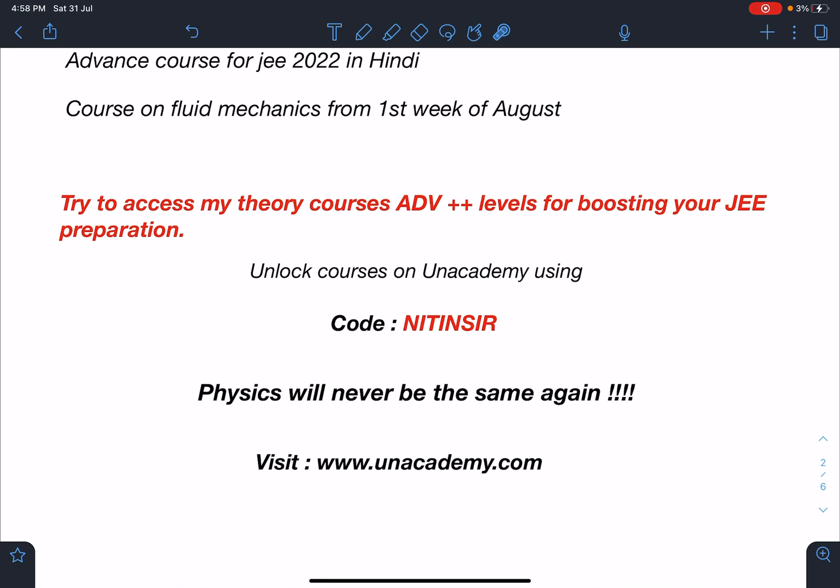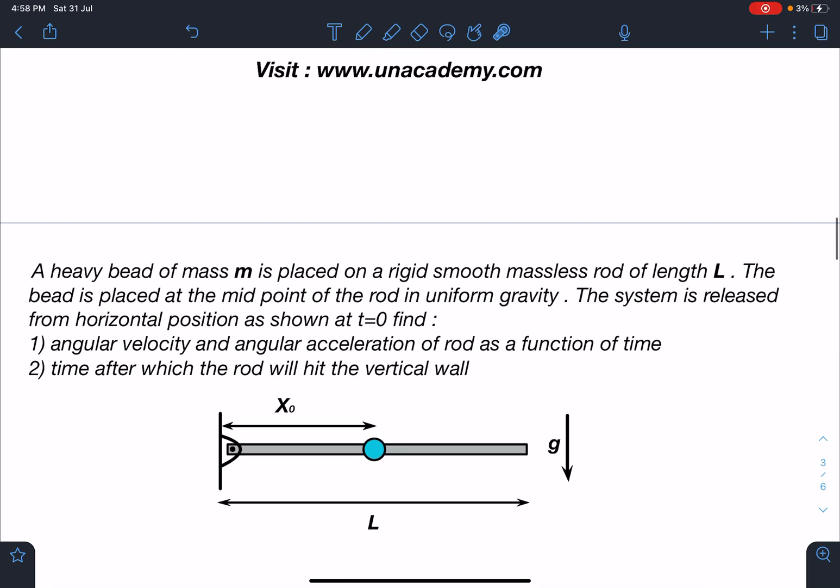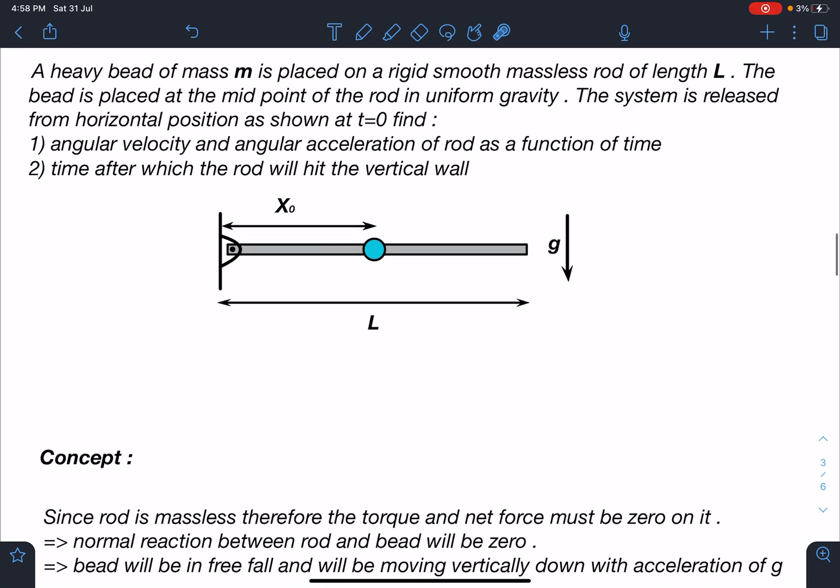Guys, trust me, physics will never be the same again. So here is the problem statement: A heavy bead of mass m is placed on a rigid smooth massless rod of length L. The bead is placed at the midpoint of the rod in uniform gravity. The system is released from horizontal position as shown at t=0. Find the angular velocity and angular acceleration of rod as a function of time, and time after which the rod will hit the vertical wall.